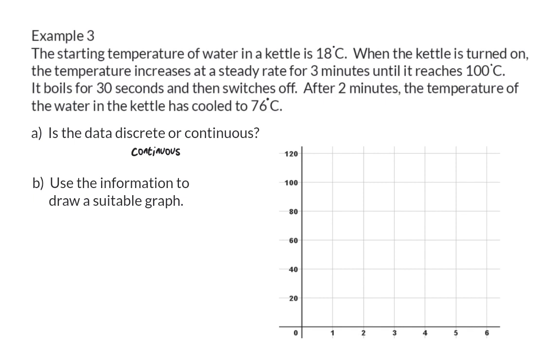Question B: Use the information to draw a suitable graph. When drawing a graph, you should always start by adding a heading and naming your axes. I'm going to make this heading the temperature of water in a kettle, and my horizontal axis, which will be my independent variable, will be the time that passes in minutes. On my vertical axis, I always have the dependent variable, and here, that will be the temperature in degrees Celsius.